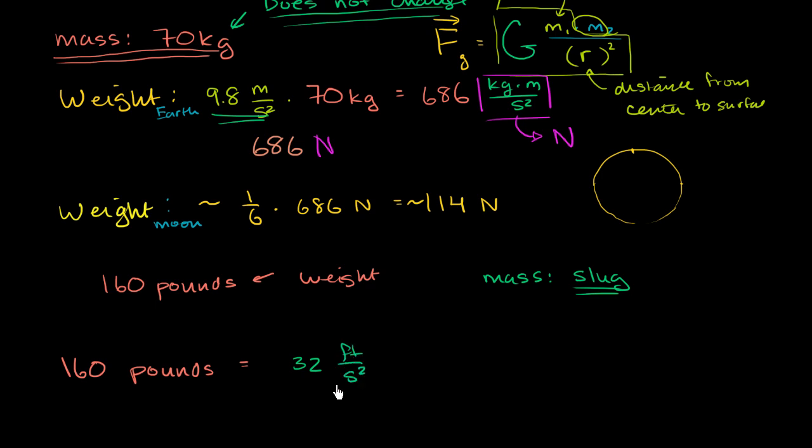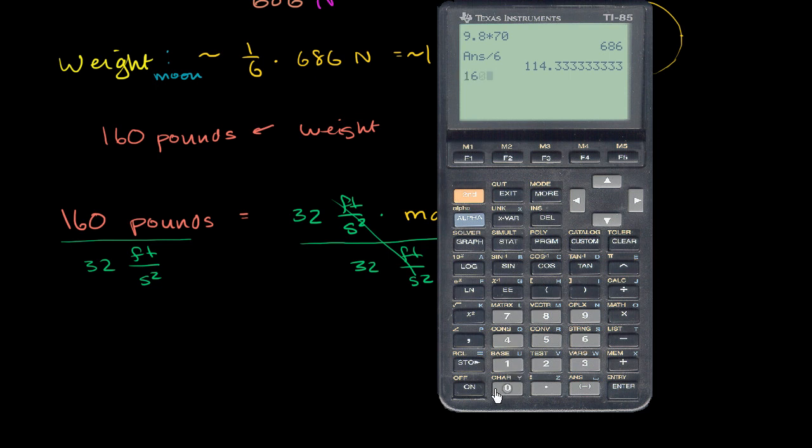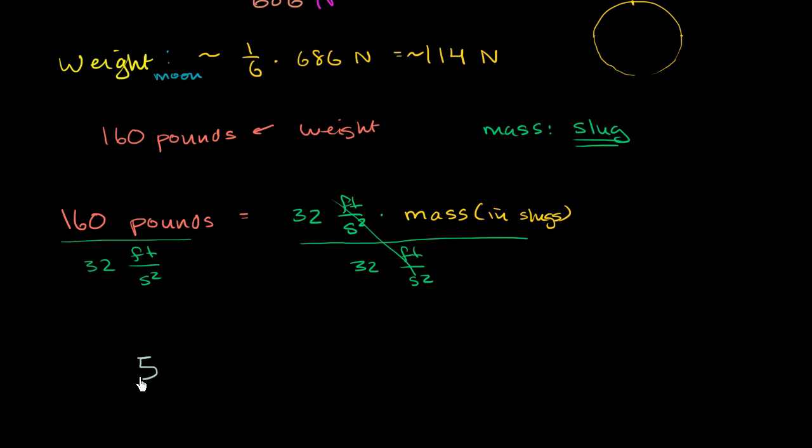And then this is times your mass in slugs. So to figure it out, you divide both sides by 32 feet per second squared. So let's do that. Let's divide both sides by 32 feet per second squared. Divide both sides by 32 feet per second squared. Cancels out. And then let me get my calculator out. So I have 160 pounds divided by 32 feet per second squared, and I get exactly 5. I should have been able to do that in my head.